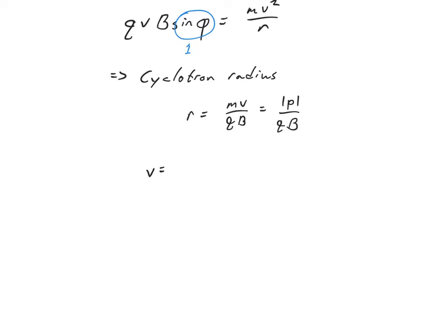And my speed v is going to be qrb over the mass. And my speed v is also going to be equal to the circumference of the orbit in which it's traveling, 2 pi r divided by the period t.